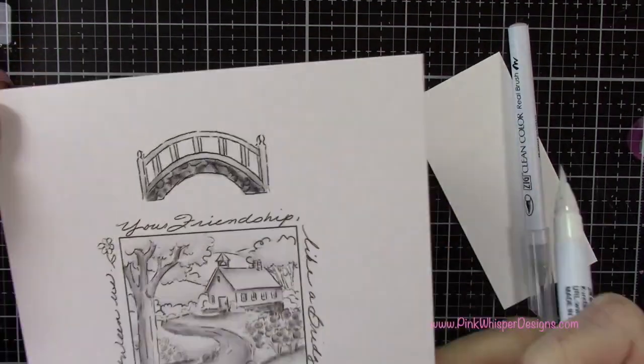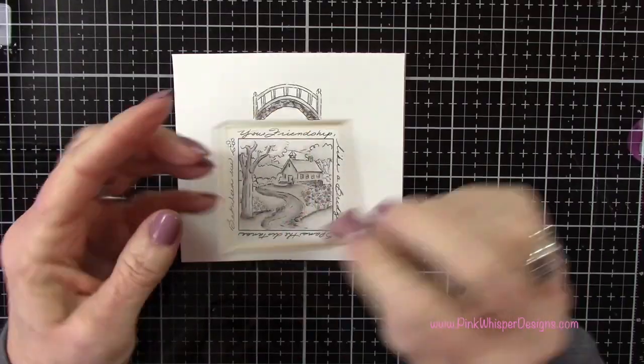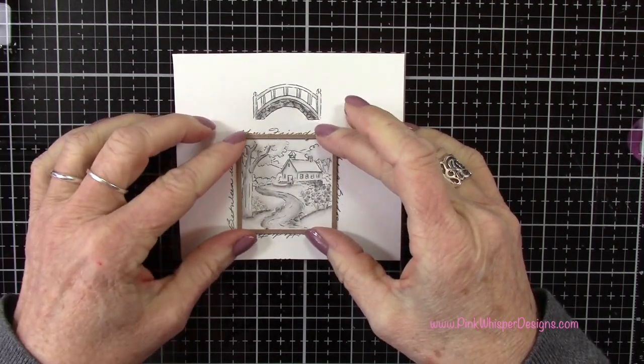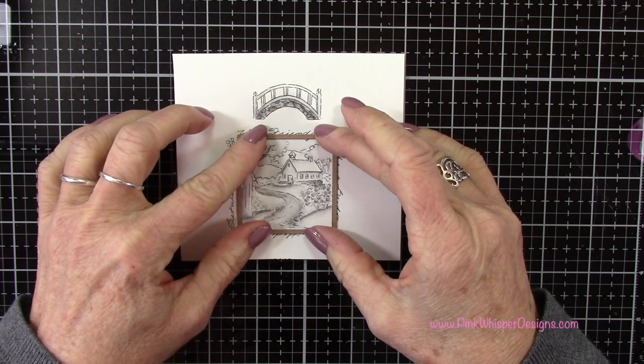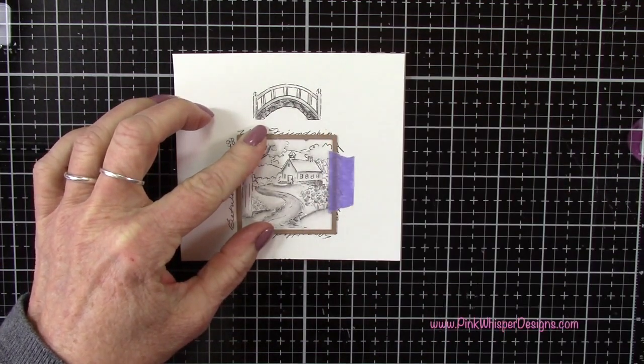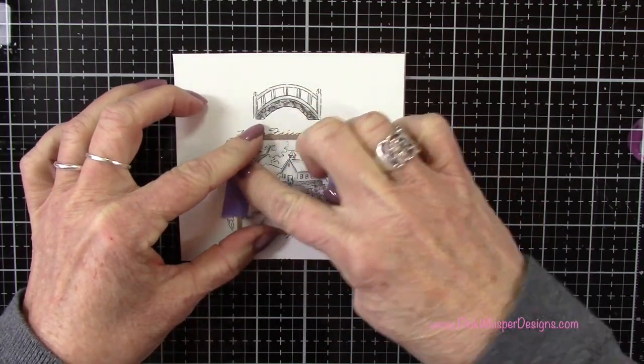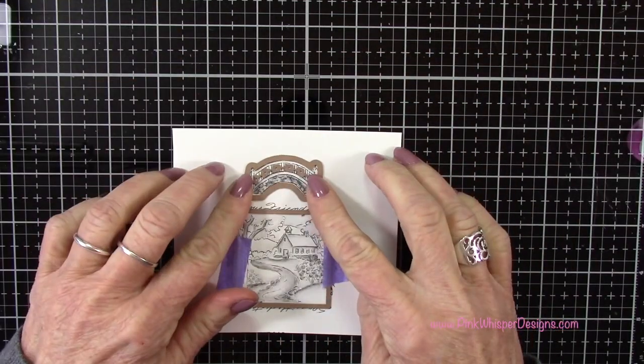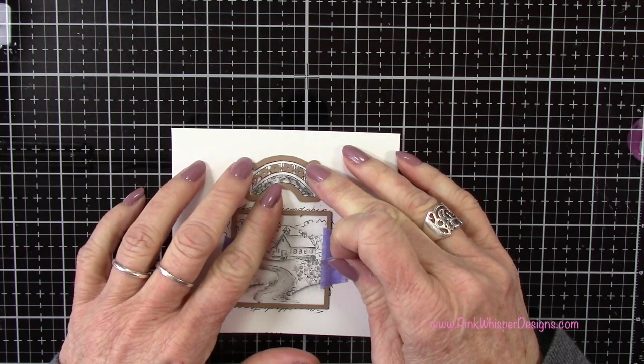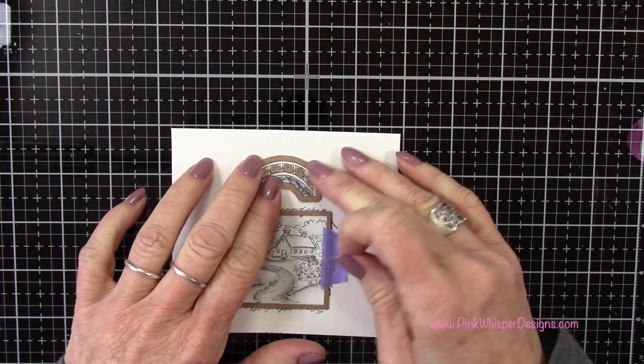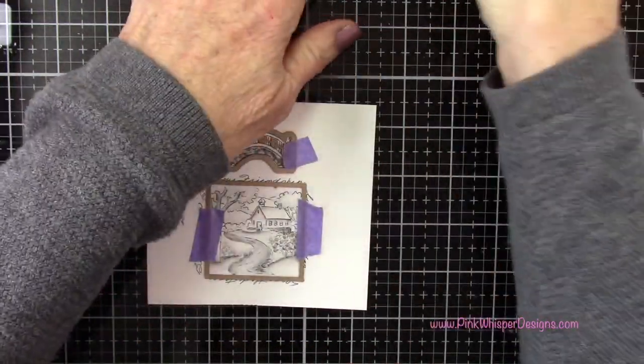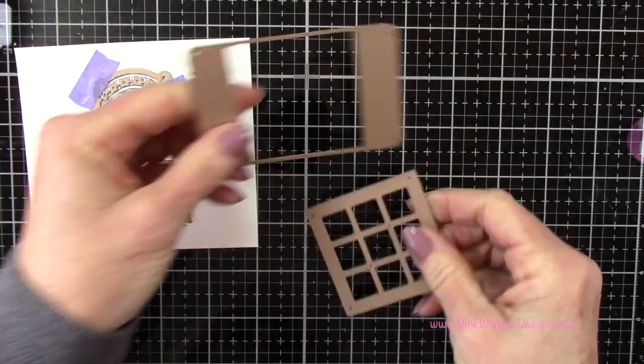Now you have the square die. It also comes with the shadow box window die set and that will cut away the sentiment. We're not going to be using that sentiment today so we're just going to center that square die, tape it down with a little bit of purple tape. I'll do the same thing here with the bridge die, and of course that bridge die came with the bridge window accessory set. For those two pieces I've used the Strathmore Bristol Smooth 100 pound cardstock to do my stamping and coloring there.